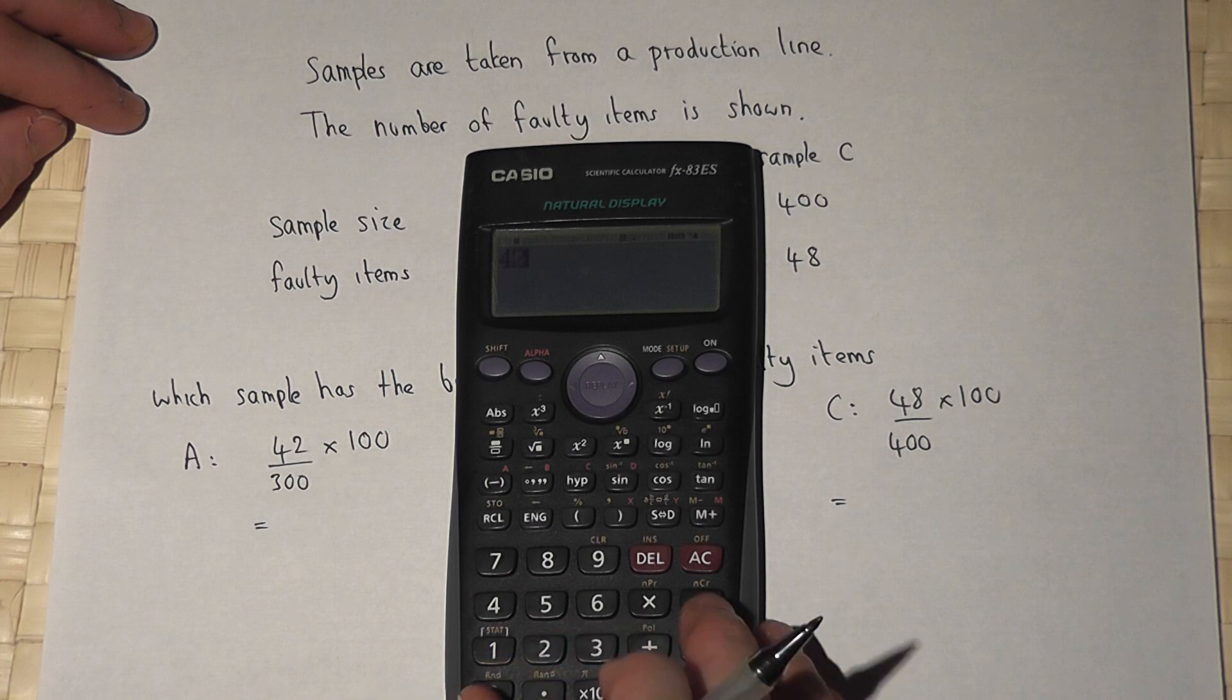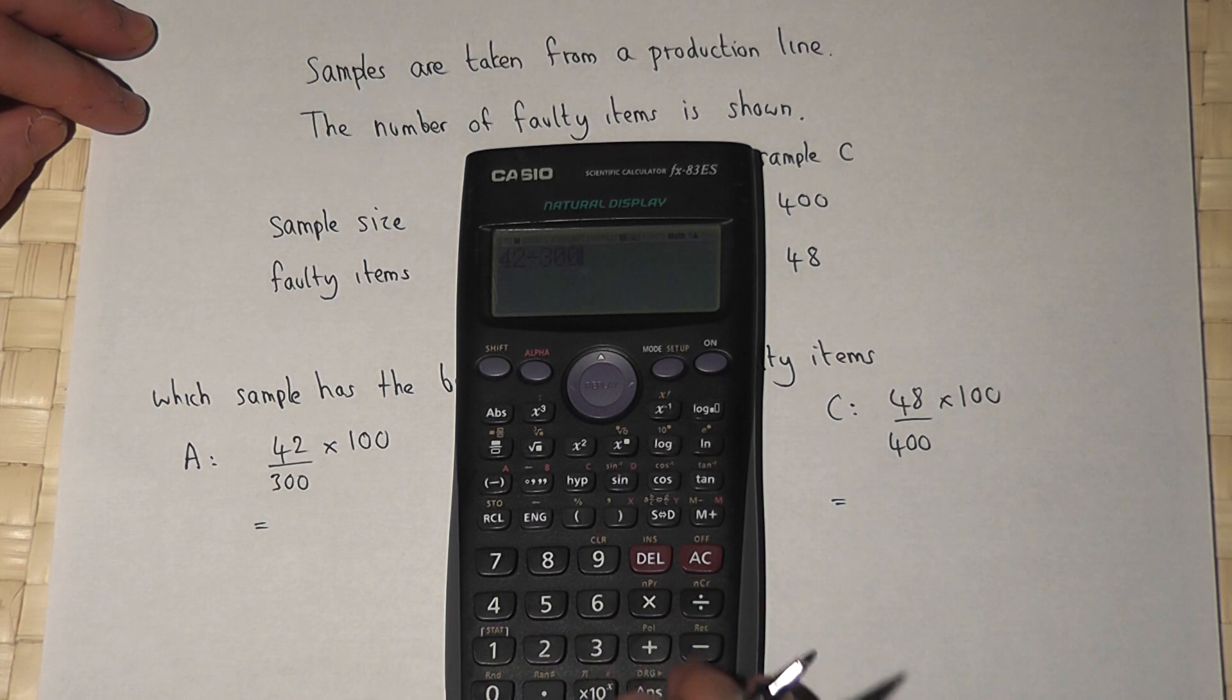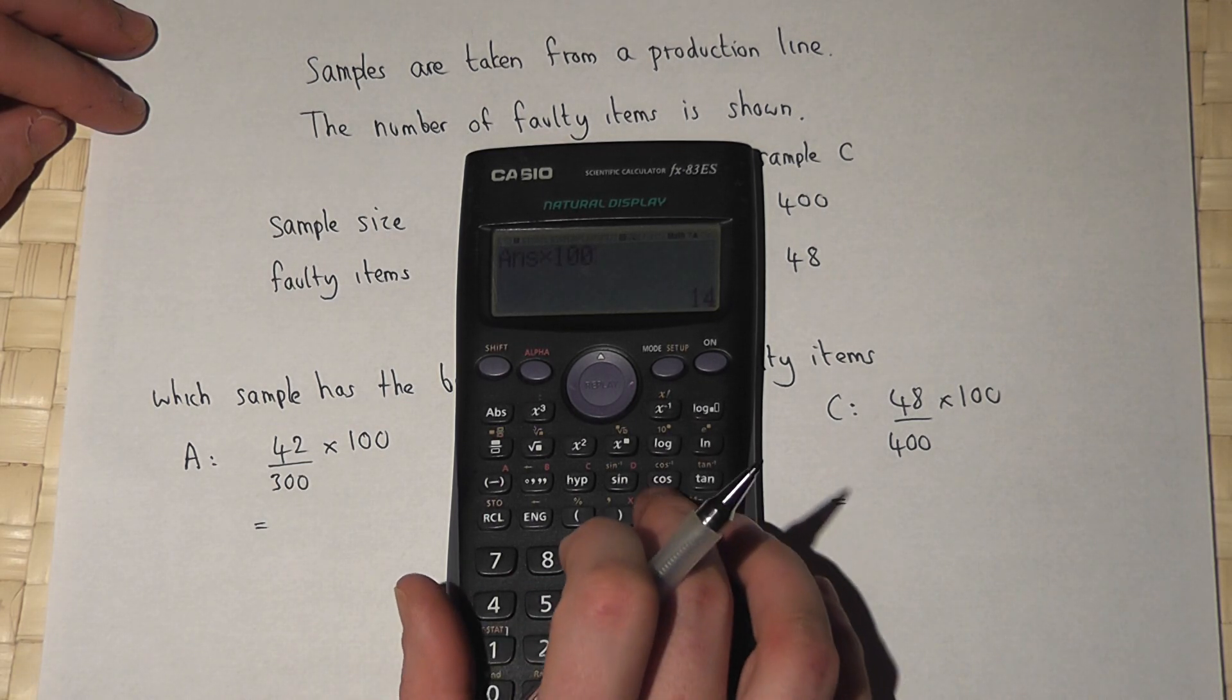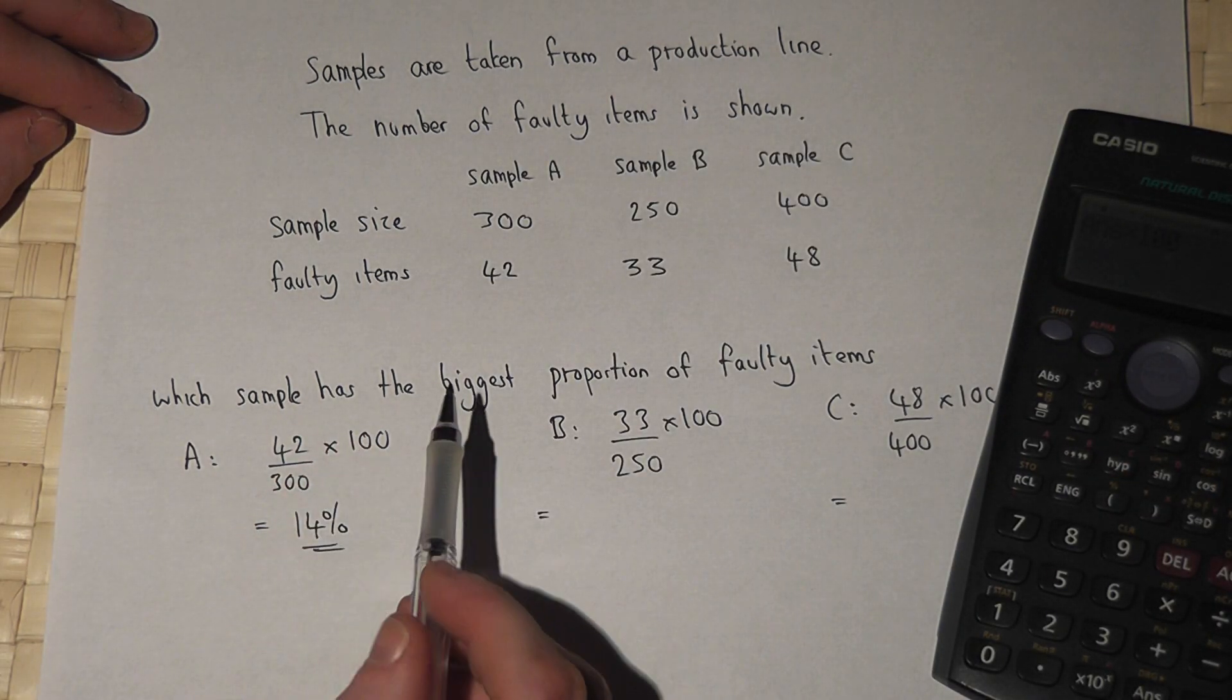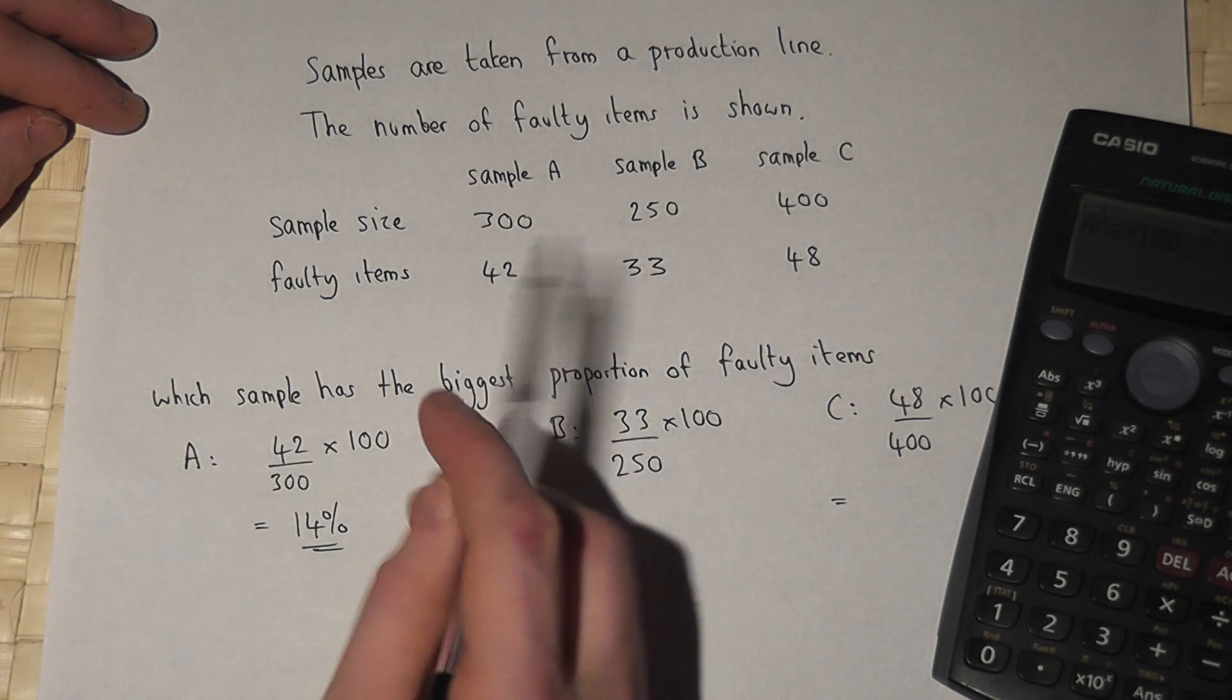In sample A, 42 divided by 300, times 100, works out to 14%. So 14% of sample A was faulty.